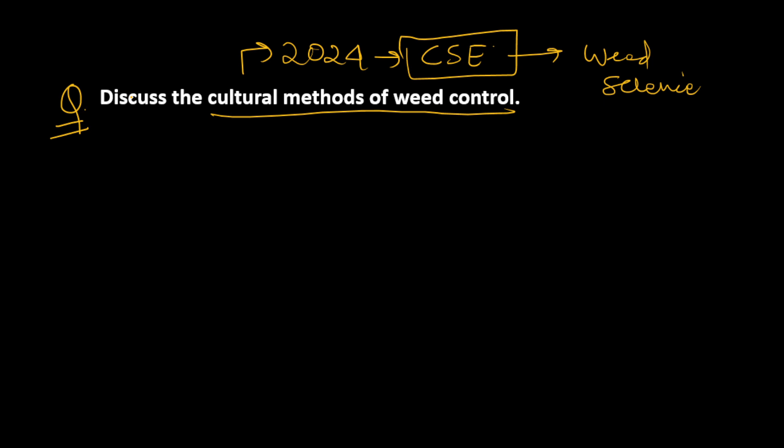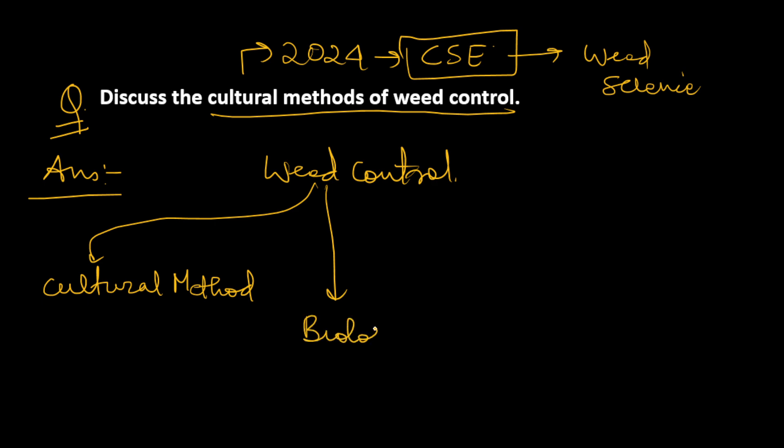Let's see how we can approach the answer. We all know what weed control is and there are various methods of weed control. One is the cultural method which is asked in the question, we can use biological method, we can use physical methods, and we can also use chemical methods.